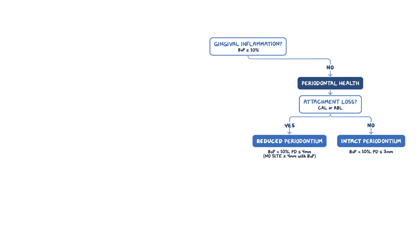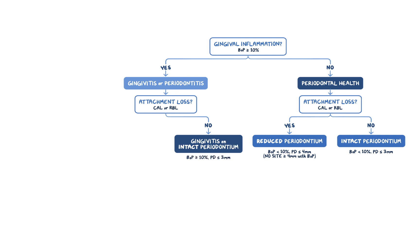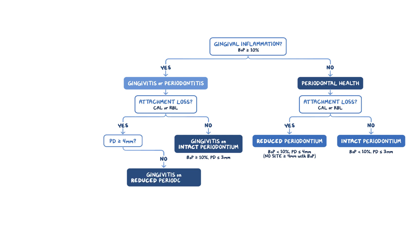If there is bleeding on probing of 10% or more, that means you have gingival inflammation, and you could have either gingivitis or periodontitis. The presence of attachment loss and probing depth will guide the next step. If there is no attachment loss, then you have gingivitis on an intact periodontium. If there are both inflammation and attachment loss, the probing depth differentiates gingivitis from periodontitis. If the probing depth is 3 mm or less, then you have gingivitis on a reduced periodontium. Remember, these patients are at high risk of disease recurrence and progressive attachment loss, so this is defined by bleeding at a shallow pocket of 3 mm or less rather than 4 mm or less.